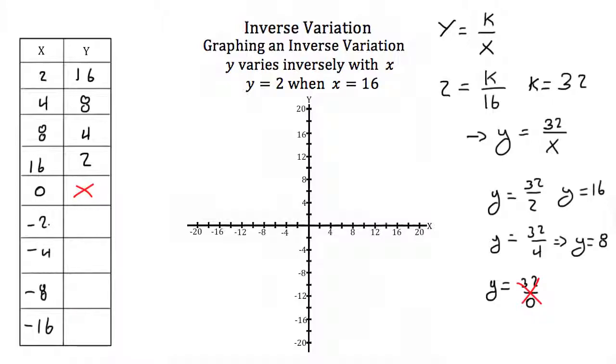For x equals negative 2, y equals 32 divided by negative 2 equals negative 16. For x equals negative 4, y equals negative 8. For x equals negative 8, y equals negative 4. And for x equals negative 16, y equals negative 2.